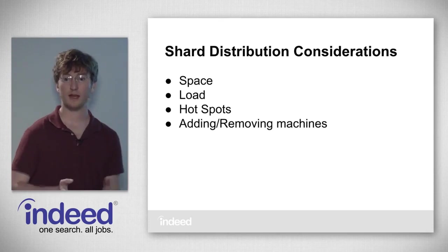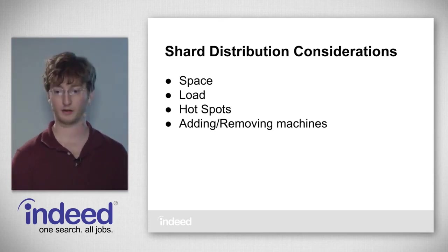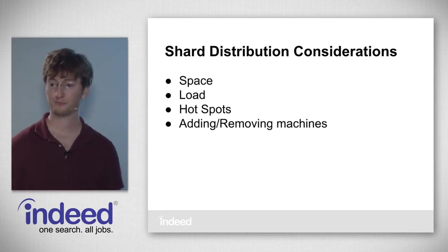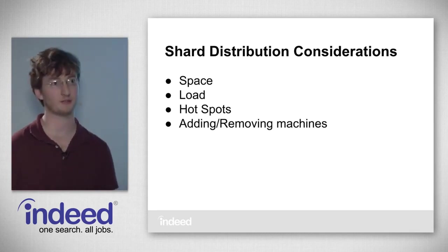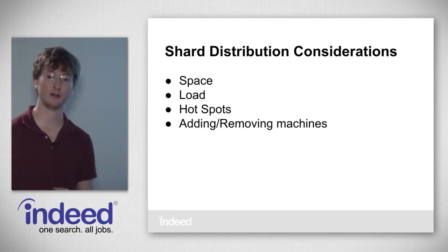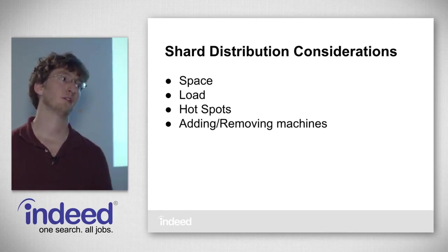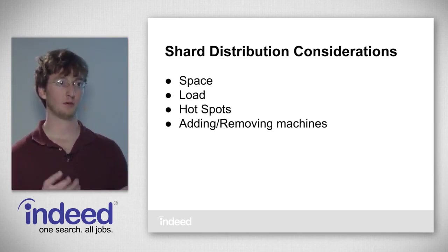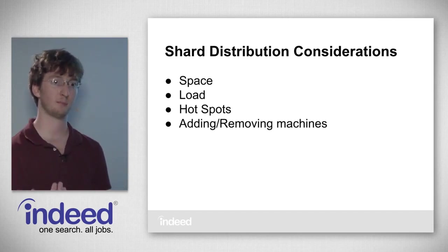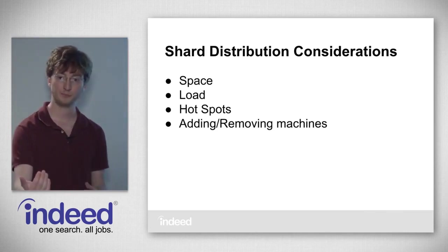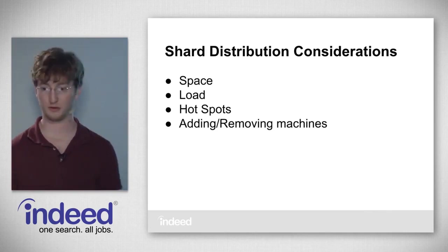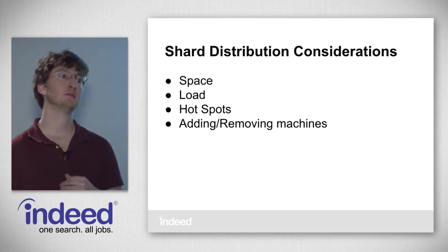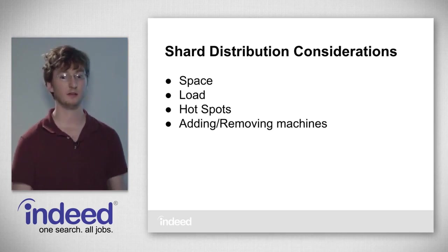The considerations for shard distribution are: space — we want even space usage across machines; query load — we want even CPU usage; and avoiding stragglers. This system is very susceptible to stragglers because when merging sorted streams, you can only merge as fast as your slowest producer. So unbalanced query load is very bad — it slows the whole system down. We also want to avoid hotspots and be able to add or remove machines while rebalancing.